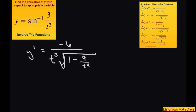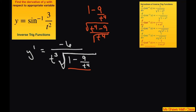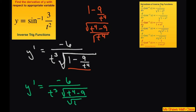We need to get a common denominator inside the radical, which is t to the fourth. So 1 minus 9 divided by t to the fourth becomes t to the fourth minus 9, all divided by t to the fourth. Putting the radical sign under each piece gives us y prime equals negative 6 over t cubed times the square root of t to the fourth minus 9, divided by the square root of t to the fourth.